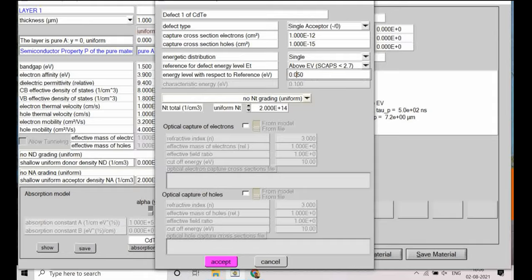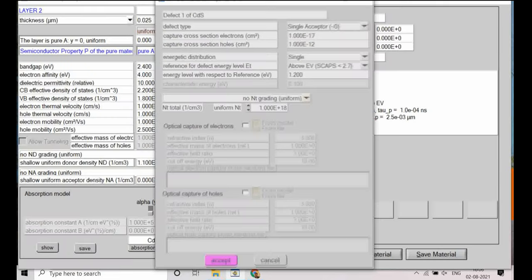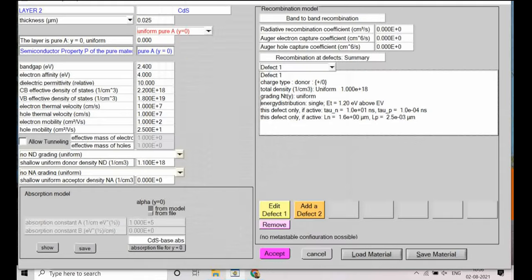So acceptor defect and all those things are correct. And then I will go to CDS. Here they have taken acceptor type. So again this will be donor type. And okay now we are done. SNS is okay, this is again donor type. So this is correct.